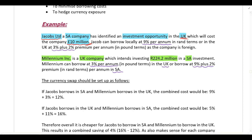If Jacobs borrows in South Africa, they can borrow at 9% per annum, and if Millennium borrows in the UK, they can borrow at 3% per annum. That gives us a combined cost of 12% — the combined interest cost if both companies borrow in their home country. What happens if both companies borrow in the country they are trying to invest in?